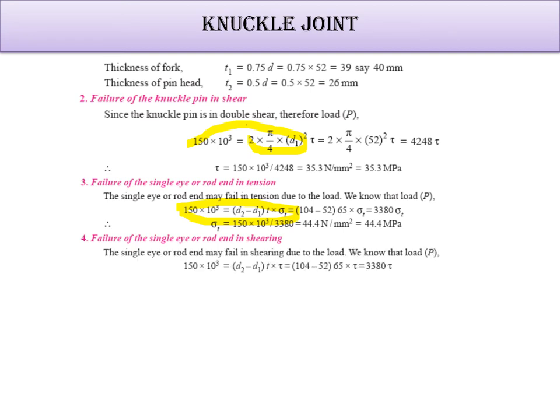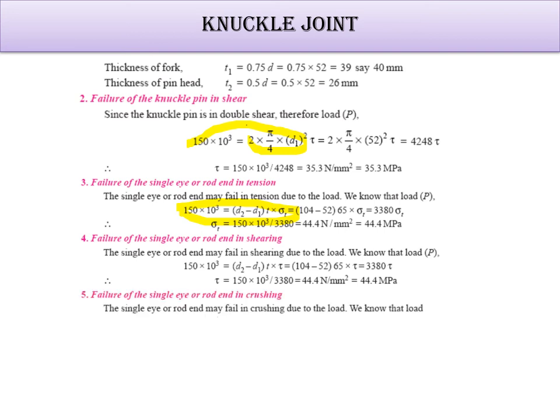Then go for single eye or rod end in shear. Same formula. Only thing is that in terms of sigma T, tau is there. So here also tau is 44.4. So single eye for crushing. D1 into T. Now just remember D2 minus D1. What D1 is equal to? D2 is equal to 2 times of D. And D is equal to D1. That means D2 is already a double part of D1. So this D2 minus D1 is equal to D1. That's why this is D1 only here. So D1 into sigma C, you will get the same value here. 44.4 MPa.